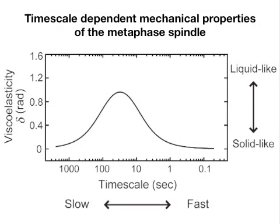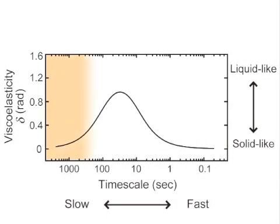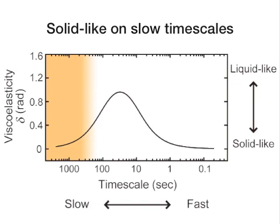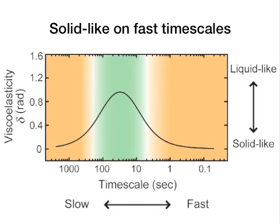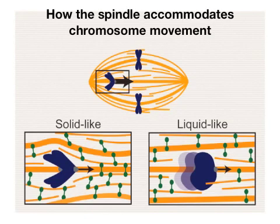The position of the stiff and the flexible needles are analyzed to determine the micromechanical property of the spindle. Based on these analyses, we find that the spindle is solid-like on slow timescales, becomes more liquid-like on intermediate timescales, and again becomes solid-like on faster timescales. These findings help us understand how the spindle responds to different forces and maintains structural and functional stability.